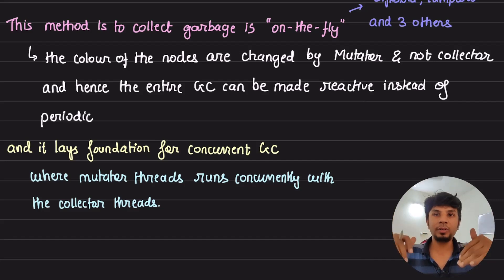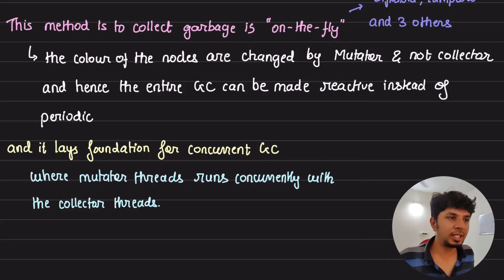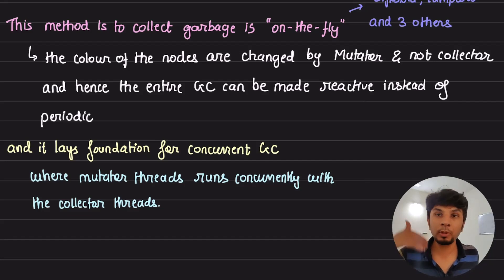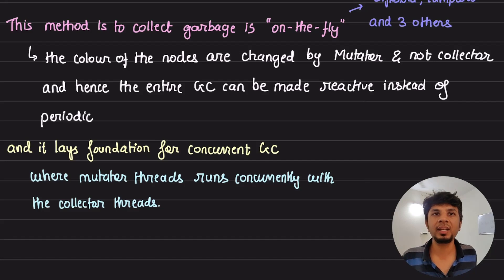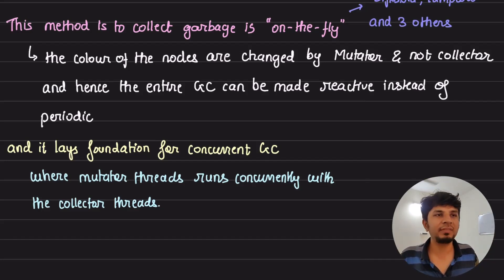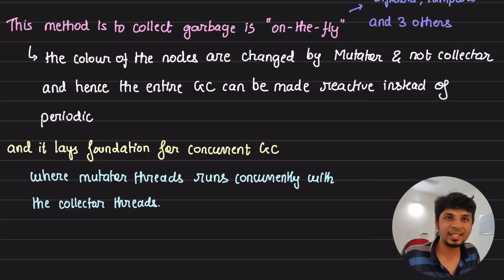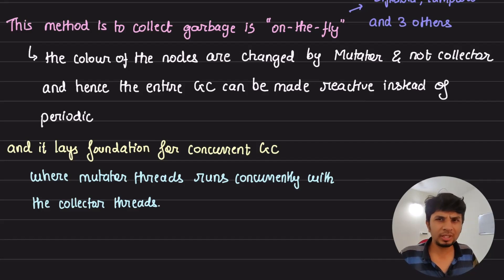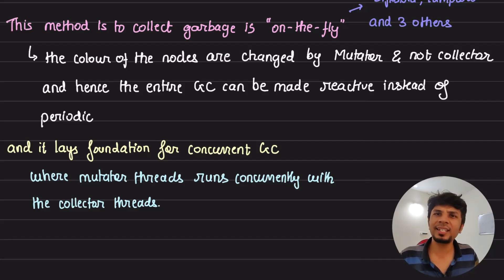That's the key idea I wanted to discuss in this video about the tricolor invariant and how it lays the foundation for concurrent garbage collection. In the next video we'll look at improving our mark and sweep garbage collection using this tricolor invariant and build a concurrent garbage collector out of it. If you liked this video give it a thumbs up, subscribe to the channel — I post three in-depth engineering videos every week.